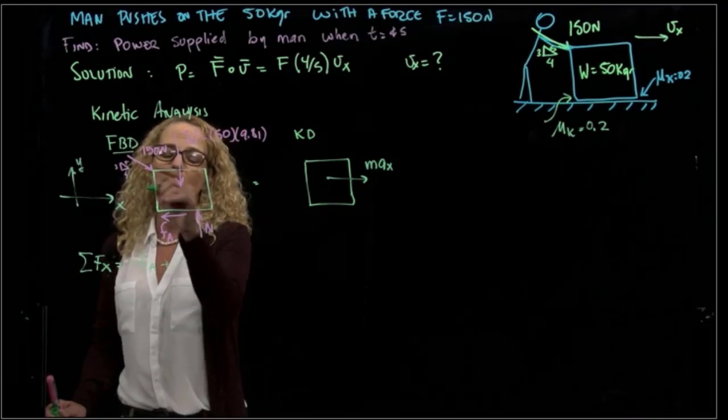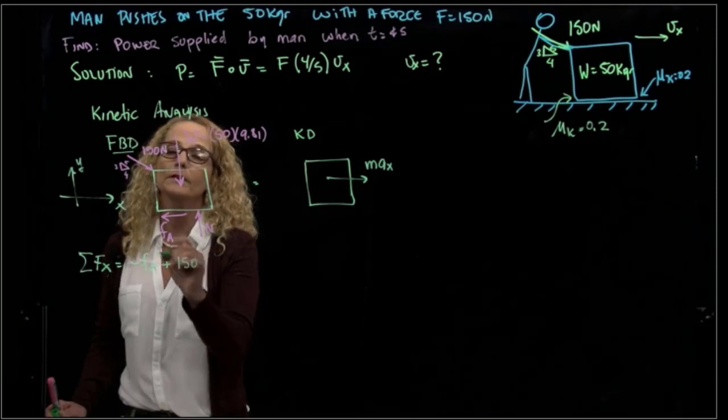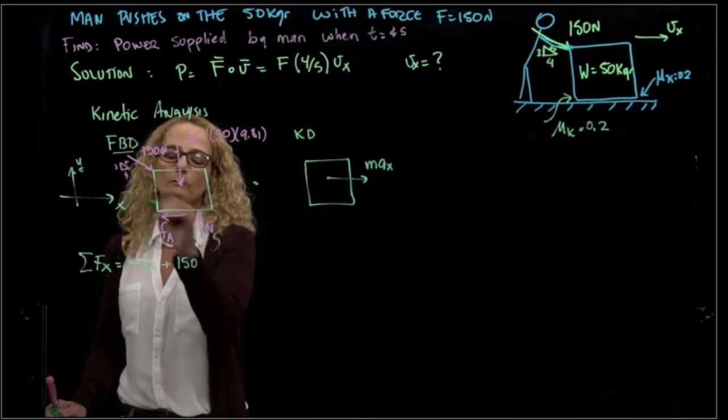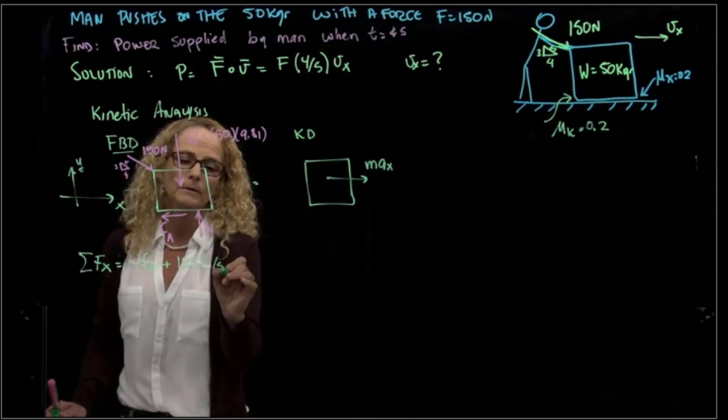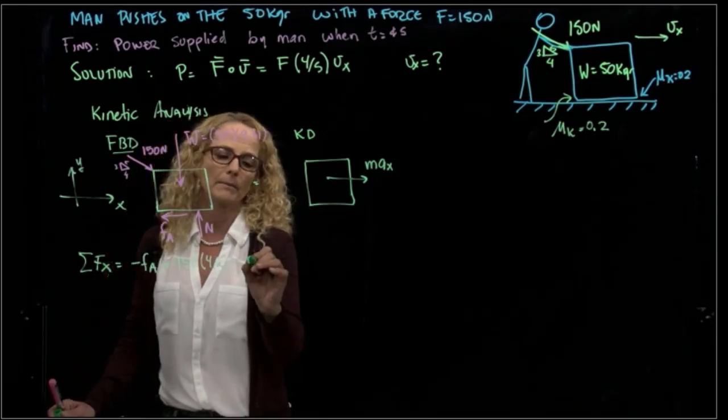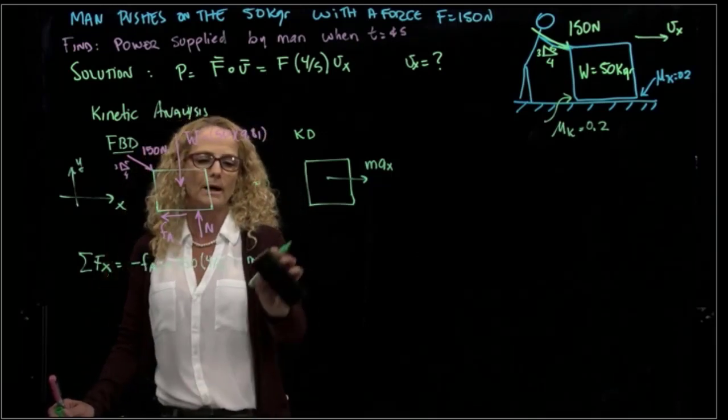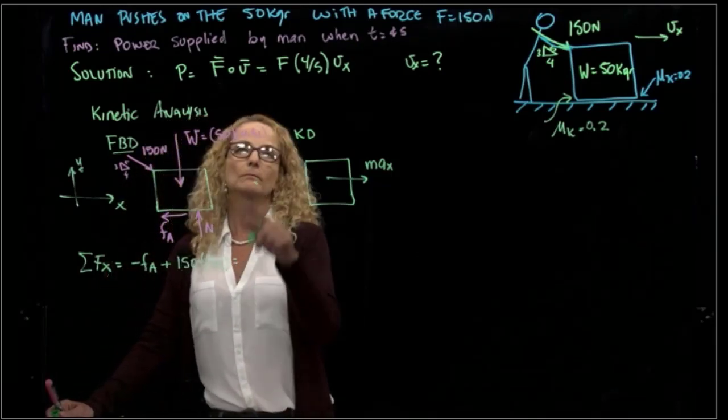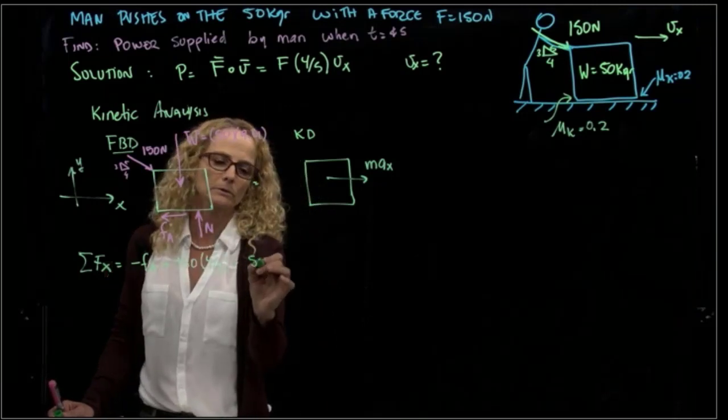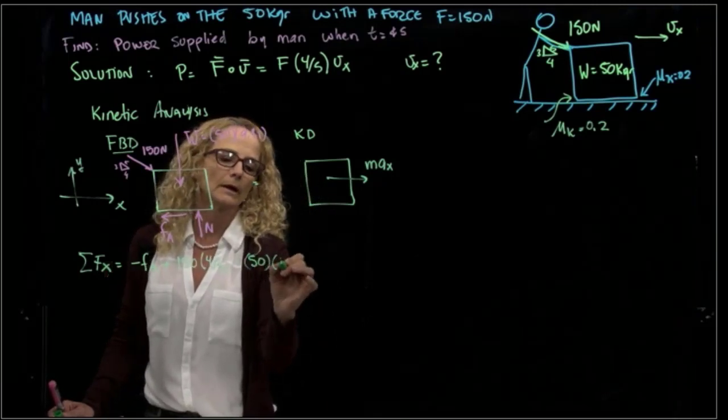we know that this is negative fa, plus my force, 150 times 4/5, equals m, which is known, the mass, my mass is 50 kilograms, times ax.